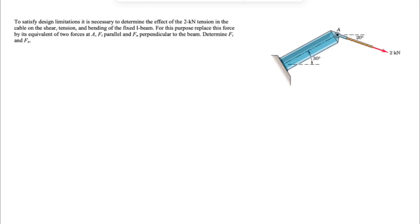Alright guys, we're going to be solving another question from the second chapter of the Miriam textbook in Geomechanics. And in this one, to satisfy design limitations, it's necessary to determine the effect of the 2kN tension in the cable on the shear tension and bending of the fixed I-beam.